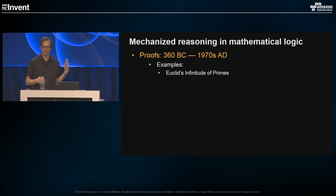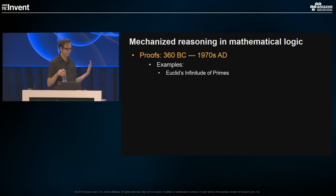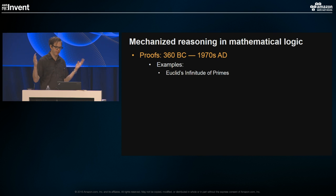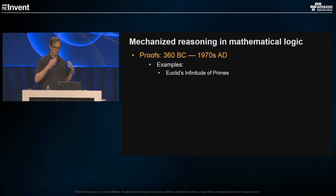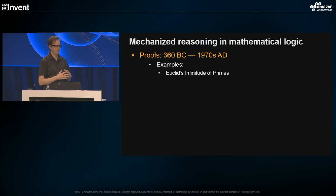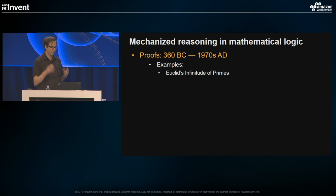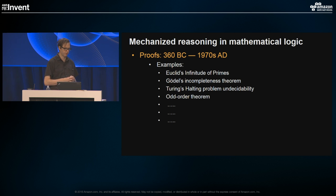From essentially the beginning of recorded history, we see people trying to reason about the infinite using finite reasoning. There are an infinite number of prime numbers — Euclid proved that without counting them all. He used an argument based on axioms and logic to convince himself and others. Gödel's incompleteness theorem, Turing's halting problem undecidability proof, et cetera, follow in this tradition.